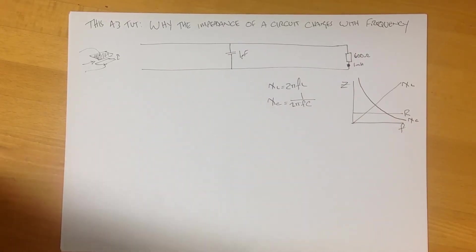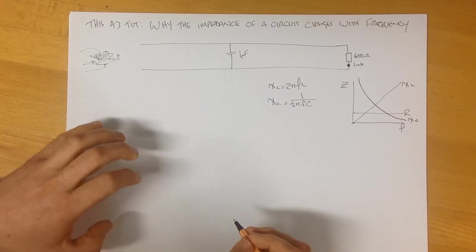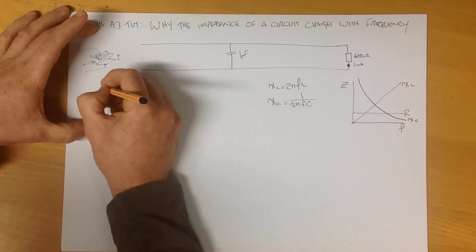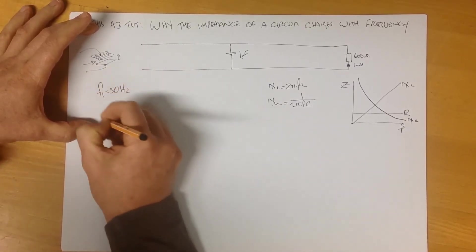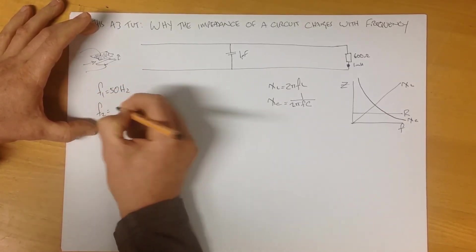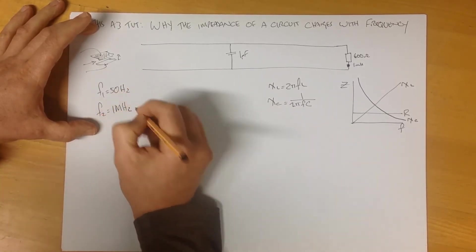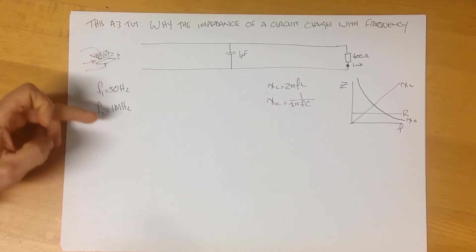So let's put some numbers to this, for those of you who are numerically orientated. Let's say, for example, this is going to be, we'll work with two frequencies. We'll call F1, we'll call that 50 hertz, and we'll call F2 arguably 1 megahertz. So we now have a low frequency that operates in most power systems and a higher frequency up in the telecommunications spectrum.